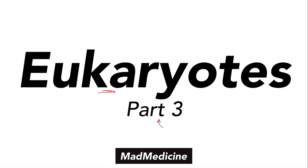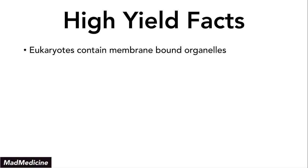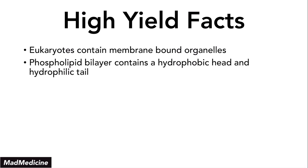In this lecture, we're going to be discussing high-yield facts about eukaryotes. The main thing you need to know is that eukaryotes contain membrane-bound organelles, unlike prokaryotes. Prokaryotes have no membrane-bound organelles.